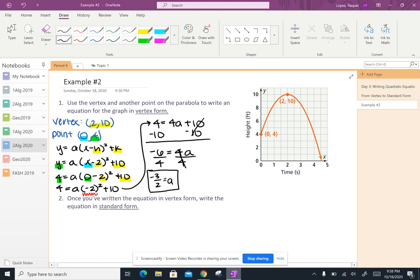And now I can write an equation in vertex form. So y equals negative 3 halves a, or negative 3 halves, that's what I got for a, x minus 2 squared plus 10. And this is my vertex form of that parabola.